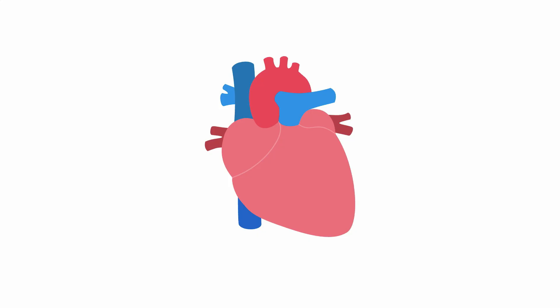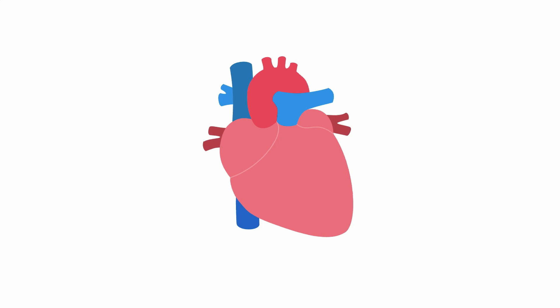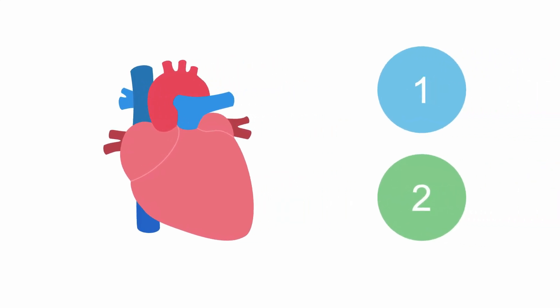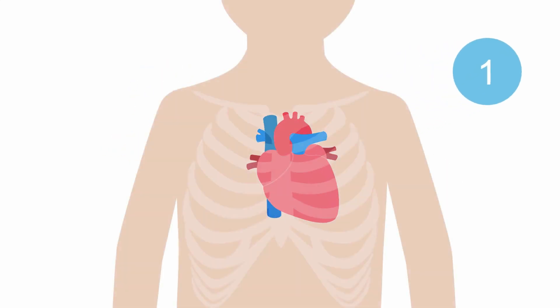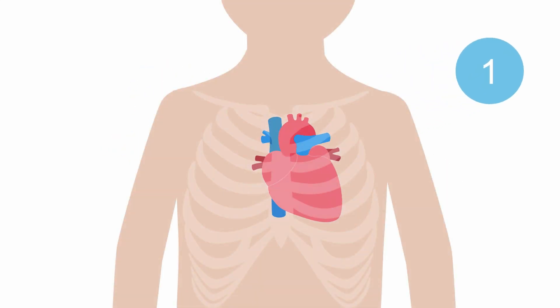The sequential segmental approach starts by describing the cardiac position and orientation. There are two aspects to this. The first describes where the heart sits within the chest. In the usual position, the heart sits in the left chest, and this is termed levoposition.